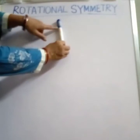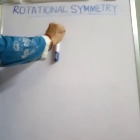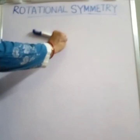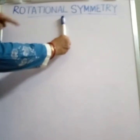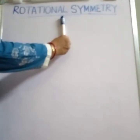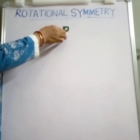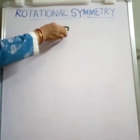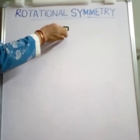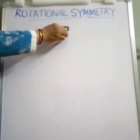I am rotating this pen in the clockwise direction. After one complete rotation it has come back to its own position. So we say that it has no rotational symmetry, as it fits its outline in only one way.